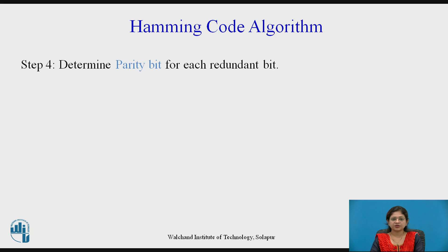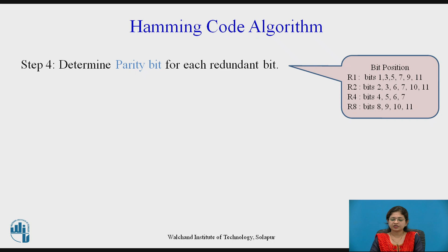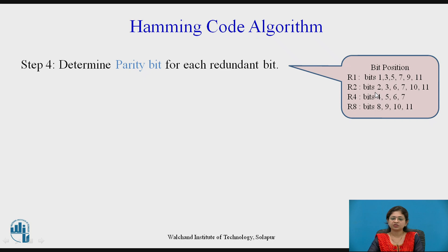The fourth step is to determine the parity bit for each redundant bit. For r1, we count the number of 1s at bit positions 1, 3, 5, 7, 9, 11, and so on. For r2, the bit positions are 2, 3, 6, 7, 10, 11, and so on.